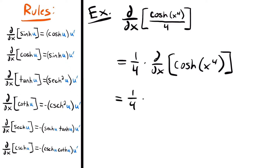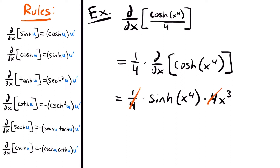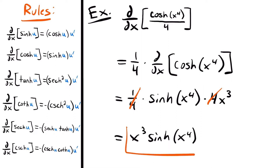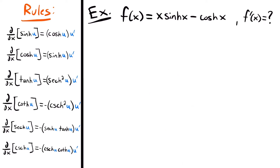Using that derivative rule, we have one fourth times hyperbolic sine of x to the fourth power, multiplied by the derivative of x to the fourth power. Using the power rule, we multiply the exponent down and subtract one, giving us 4 times x to the third power. The 4 and one fourth cancel out, so the derivative simplifies to x cubed times hyperbolic sine of x to the fourth power.